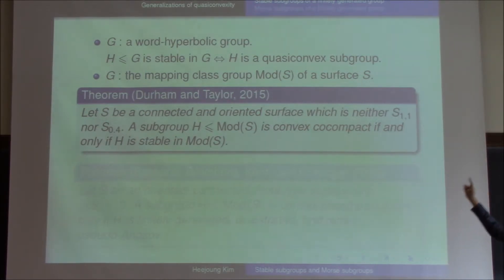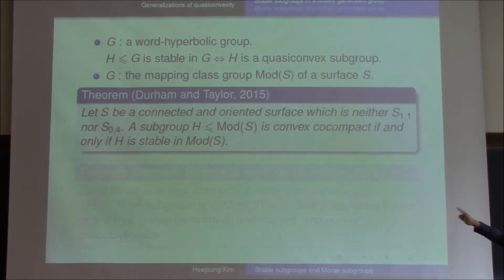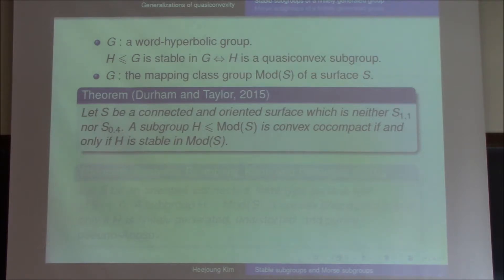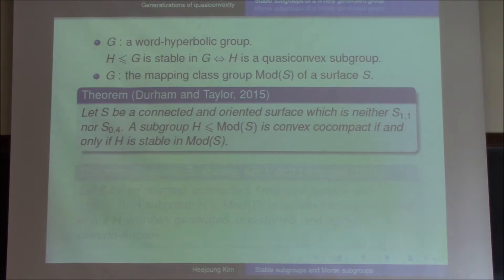We have two exceptions: the one-punctured torus and the four-punctured sphere, because their mapping class groups are virtually free. So every subgroup is quasi-convex, which means stable. But there are some subgroups generated by Dehn twists which are not convex co-compact, so we should ignore those two cases.